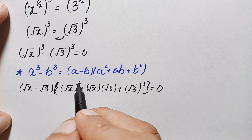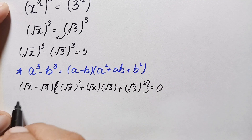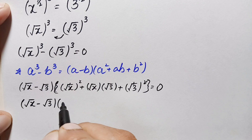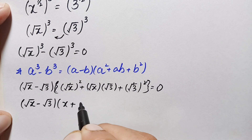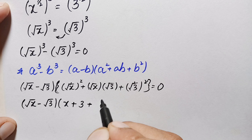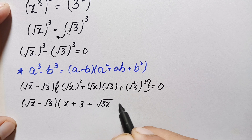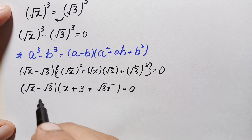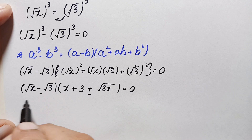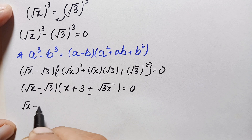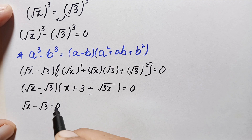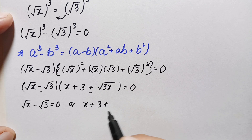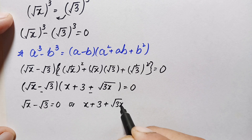Simplifying the expression: the squares cancel on the radical terms, giving us (√x − √3)(x + 3 + √(3x)) is equal to 0. Since the product of two expressions equals zero, either the first or the second factor must be zero. So we get: √x − √3 = 0, or x + 3 + √(3x) = 0.